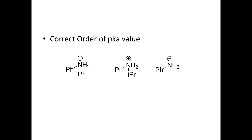The first thing to understand is: the higher the acidity, the lower will be the pKa value. So the order of acidity is inversely proportional to pKa. The lower the pKa value, the higher will be the acidity. Remember there is an inverse relation — lower the pKa, higher the acidity.